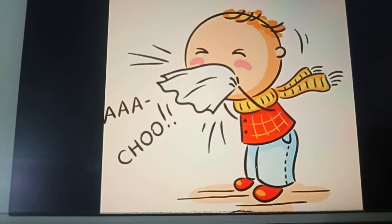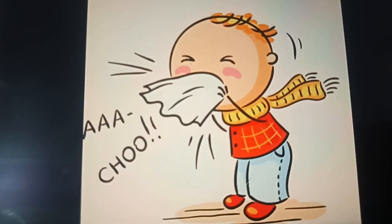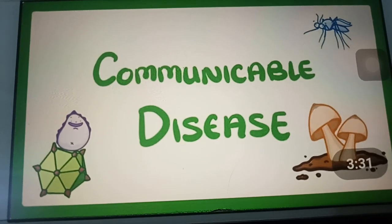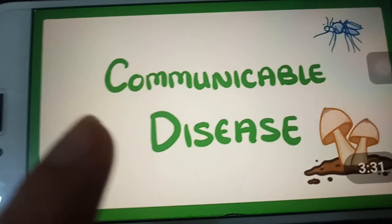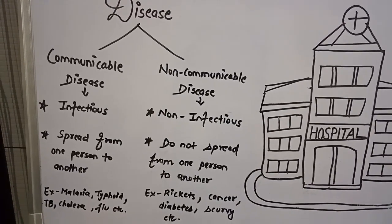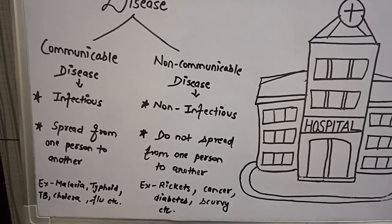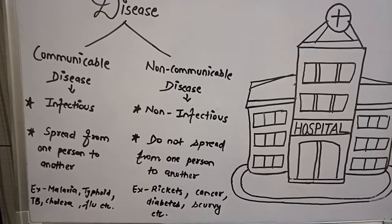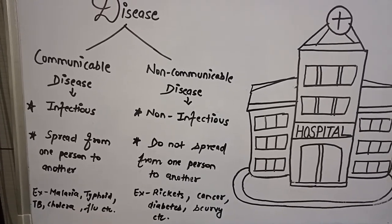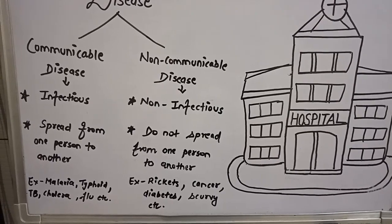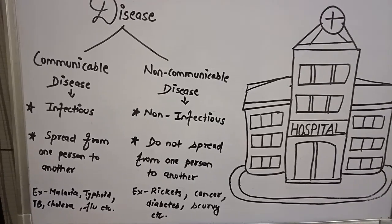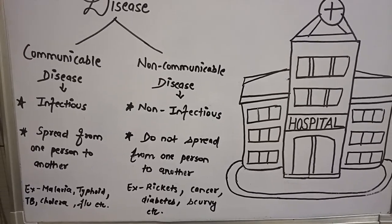Some diseases are caused by harmful germs and some are caused by lack of nutrients. In this chapter we will study two types of diseases: communicable disease and non-communicable disease. Communicable diseases, also known as infectious diseases, can easily spread from one person to another — for example, malaria, typhoid, tuberculosis, cholera, and flu. Non-communicable diseases, also called non-infectious diseases, do not spread from person to person — for example, rickets, cancer, diabetes, and scurvy.